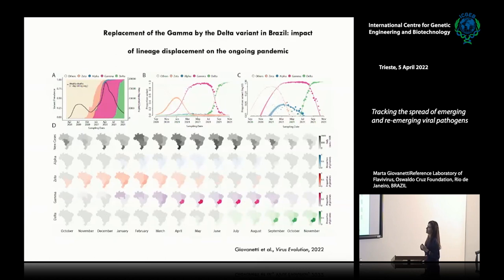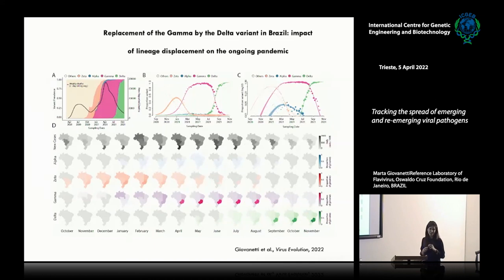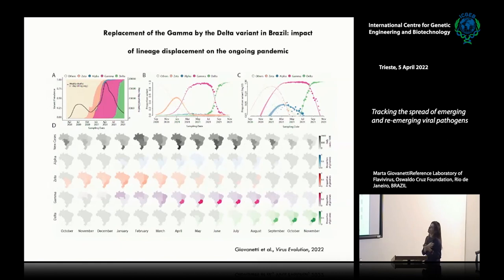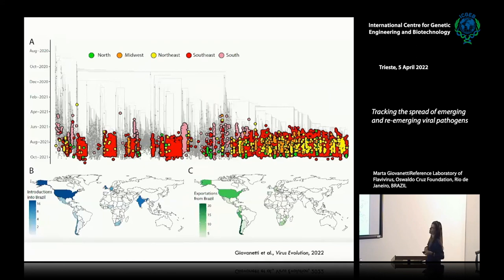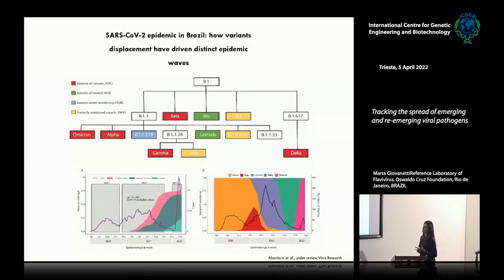This is our last work. Here, we describe what appears to be a common mechanism — variant replacement — and how it mediates increasing numbers of cases and deaths in different countries. Here we describe the Gamma-to-Delta replacement — the replacing of the Delta variant in Brazil. We tried to describe how the Delta variant became dominant in the national scenario and how complex this transmission dynamics was within the country. We also tried to understand the Omicron emergence and its replacing of the Delta variant.